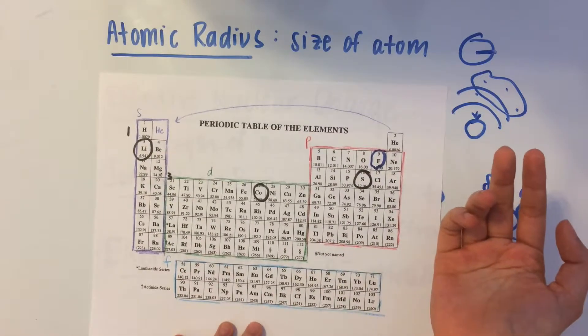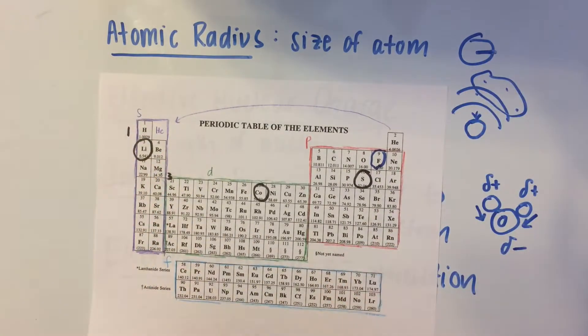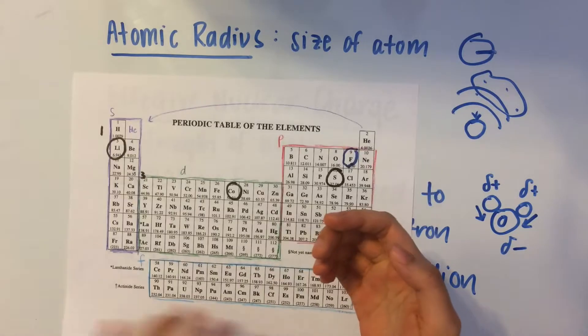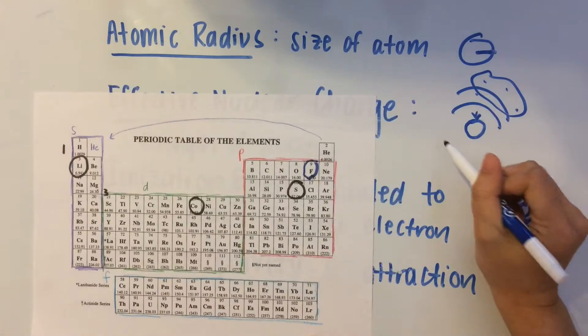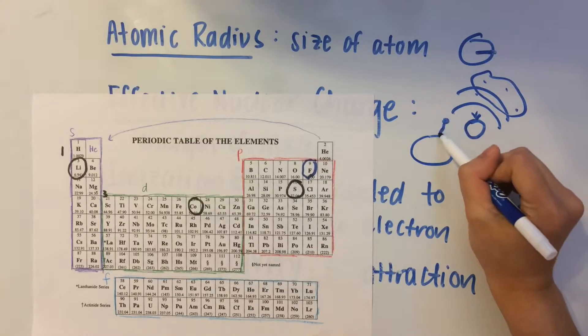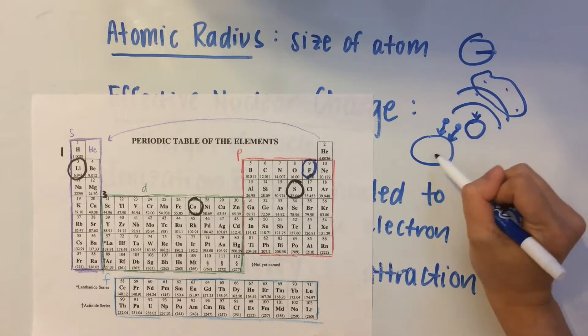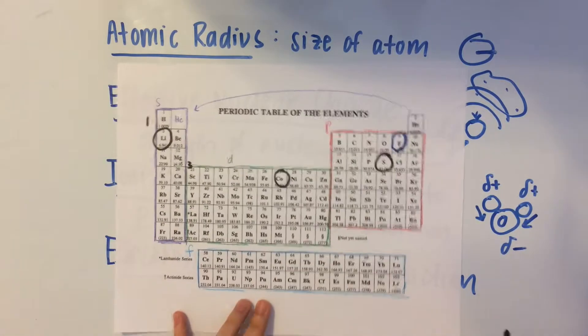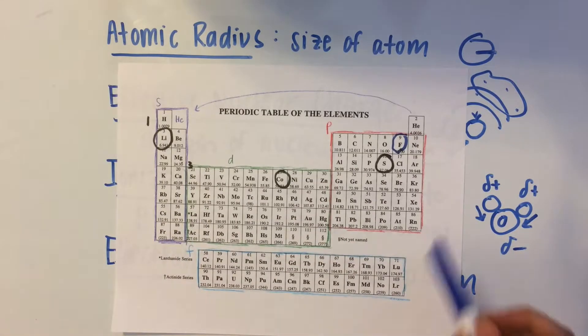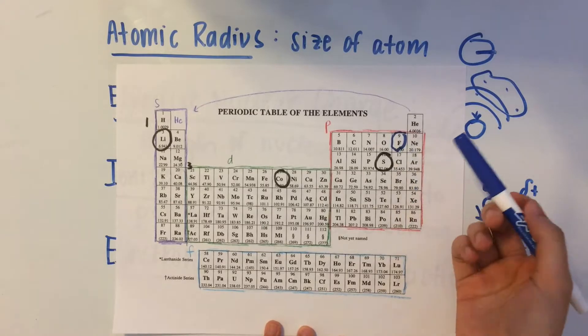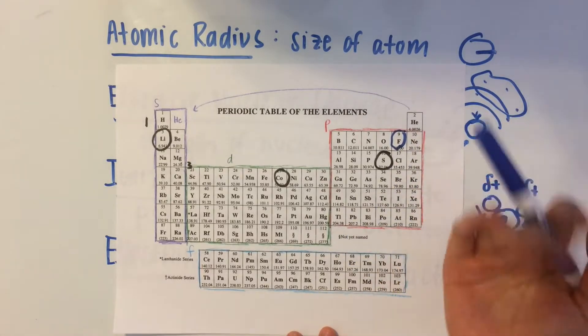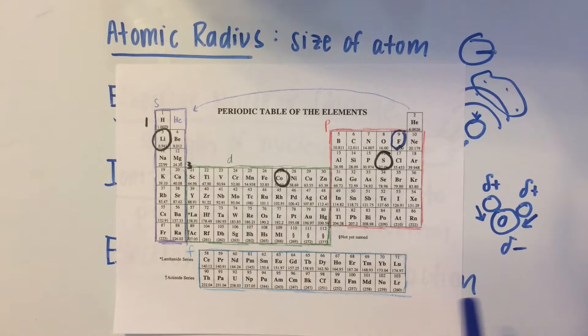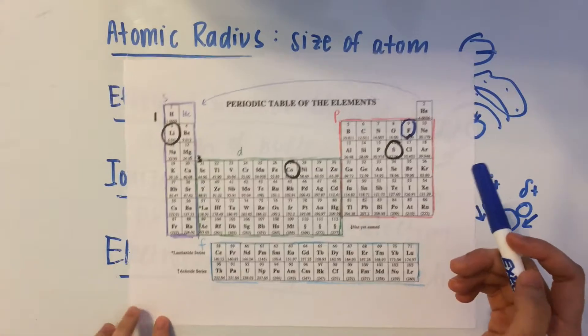And the more protons you have, the more it attracts those electrons, the more the electrons are going to want to be closer to the nucleus. So because they have more protons, they're gonna attract the electrons closer and closer, which gives them a smaller size.